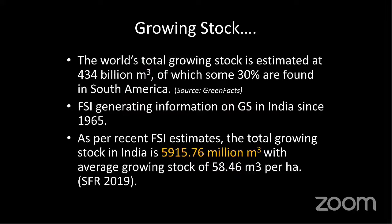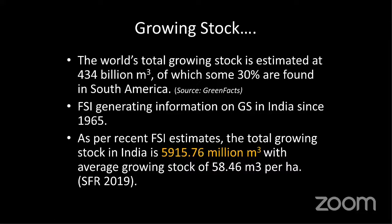Globally, growing stock is estimated at almost 434 billion cubic meters, of which around 30 percent is found in South America. In India, the Forest Survey of India has been generating information on growing stock since 1965 — so growing stock estimation is not a new concept. The total growing stock in India is estimated to be around 5,915.76 million cubic meters, with an average growing stock of 58.46 cubic meters per hectare, as per the State of Forest Report 2019.